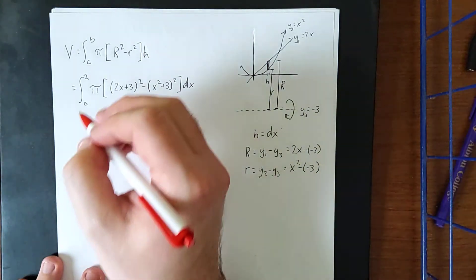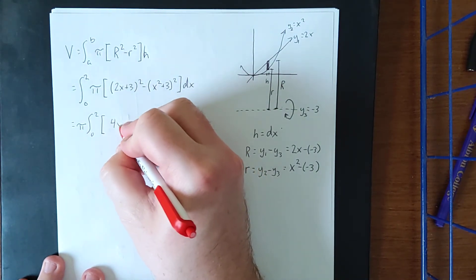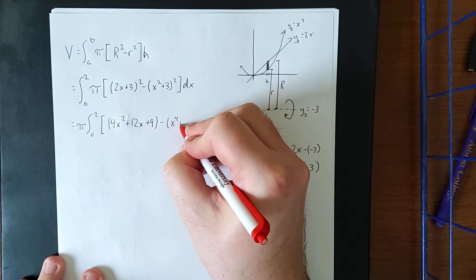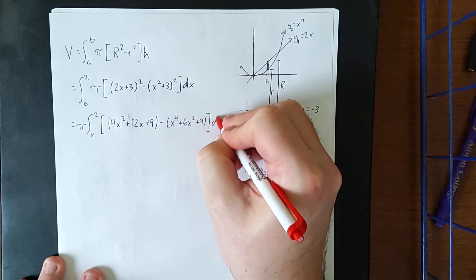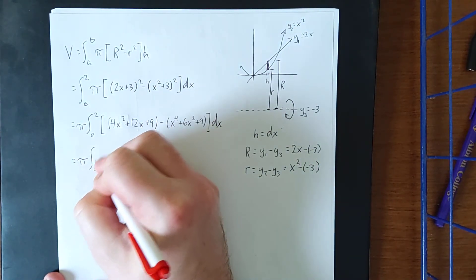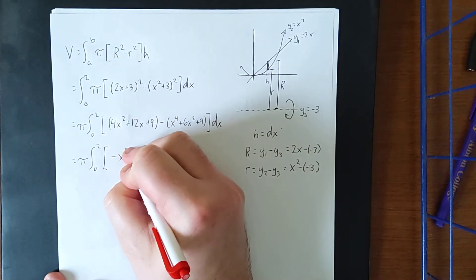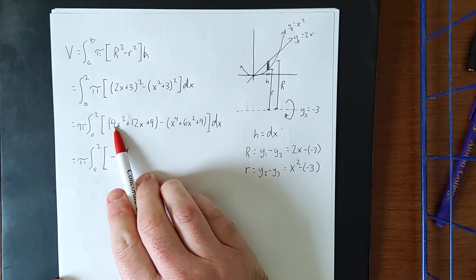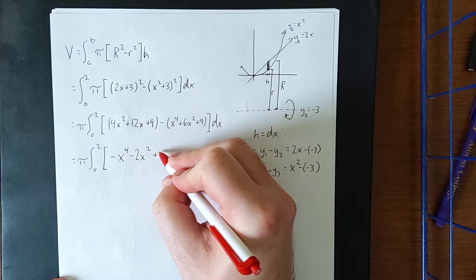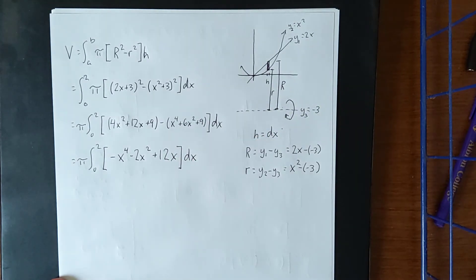Expanding algebraically: 2x plus 3 quantity squared is 4x squared plus 12x plus 9, and x squared plus 3 quantity squared is x to the fourth plus 6x squared plus 9. Distributing the negative sign and combining like terms in descending order: negative x to the fourth, minus 2x squared, plus 12x. The constant terms 9 minus 9 cancel completely.